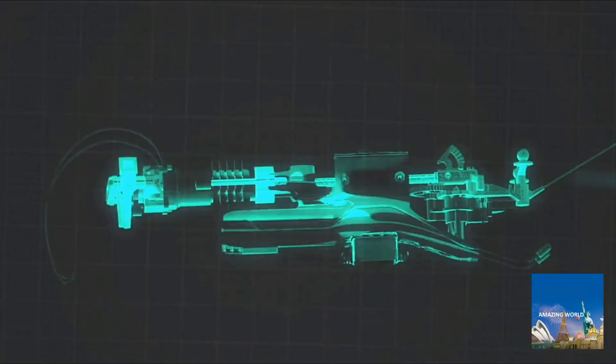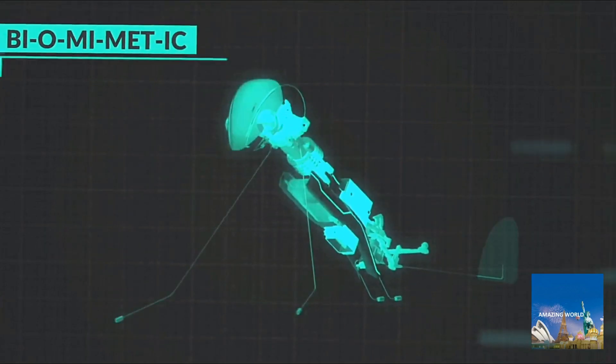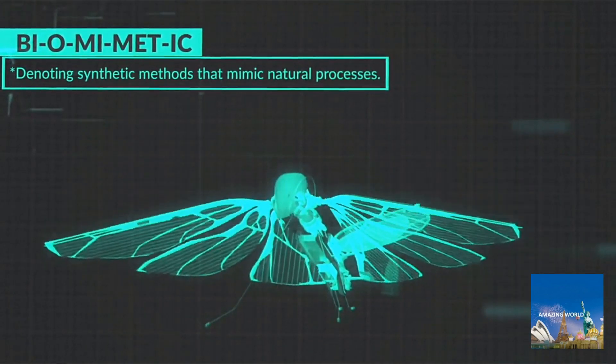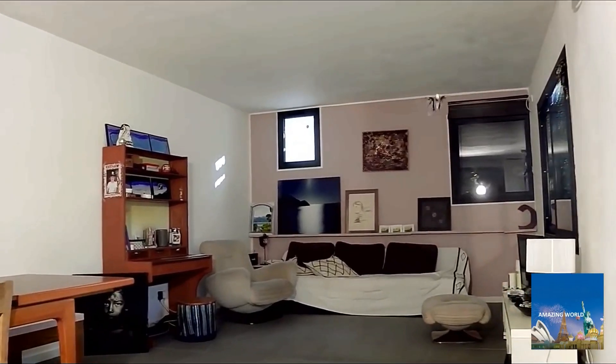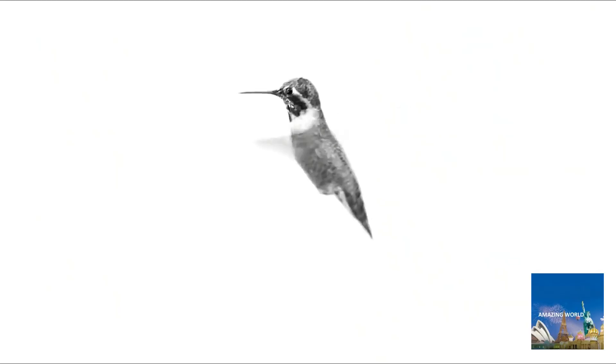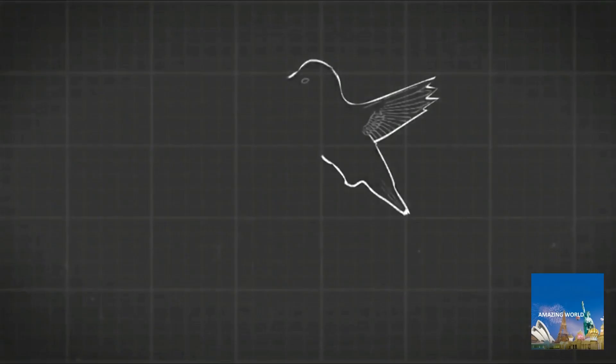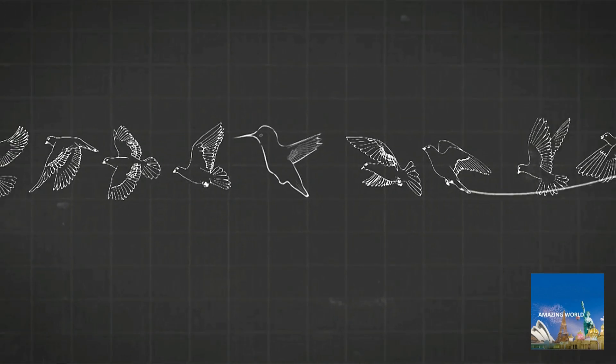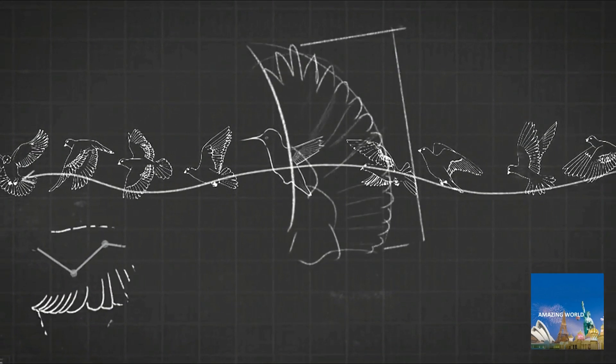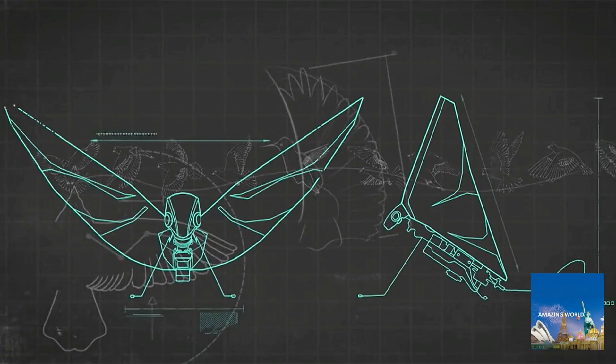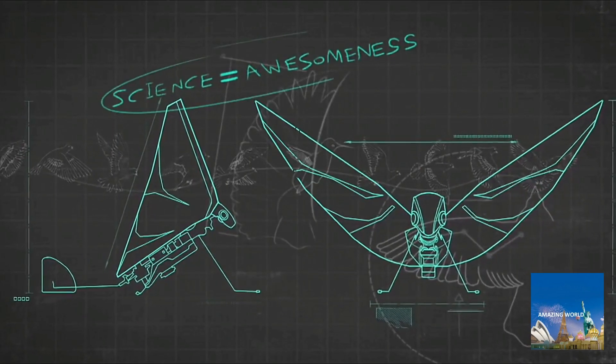MetaFly flies using a unique method called biomimetics, denoting synthetic methods that mimic natural processes. You know how a bird flies into your house and can navigate around everything without hitting anything? MetaFly can do that because it mimics the natural movement of the bird with its synthetic wings. That's science explaining awesomeness.